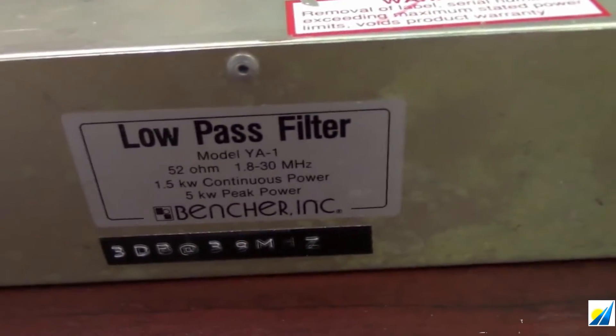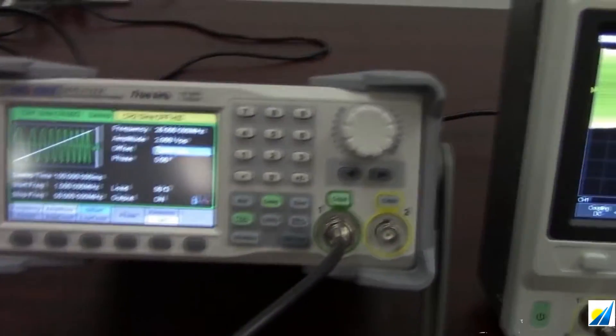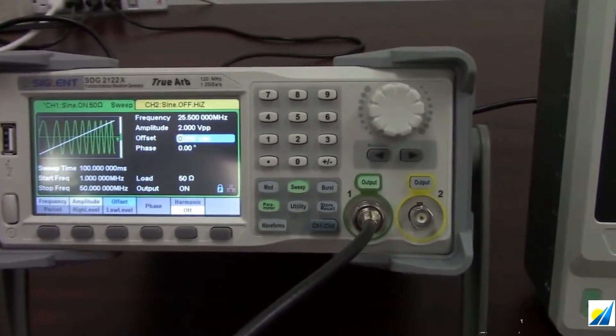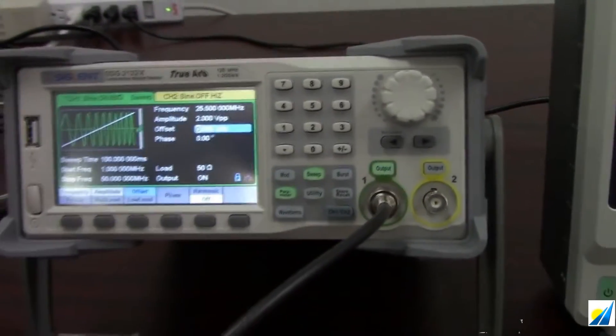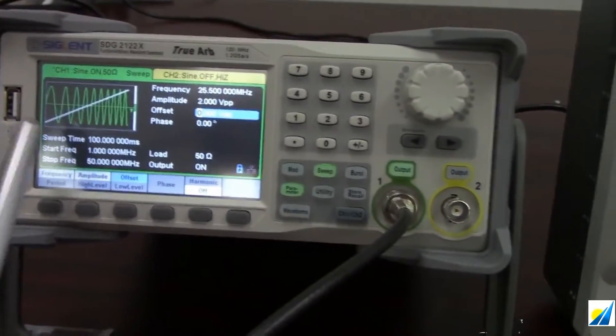We have our RF filter. Again, this one runs from 1.8 to 30 MHz. I selected an SDG2000, the 2122X. So I want to perform a sweep with this particular instrument.